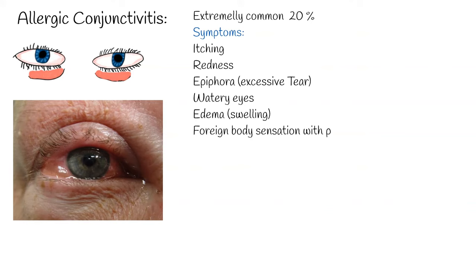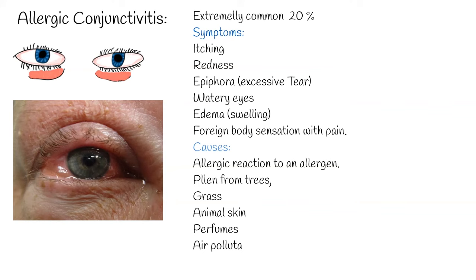The cause of allergic conjunctivitis is an allergic reaction to an allergen. Common allergens are pollen from trees, grass, and ragweed, animal skin and secretions, perfumes and cosmetics, medications, and air pollutants. The palpebral conjunctiva may become hypertrophic and gets a cobblestone appearance, called cobblestone papillae. In many cases, allergic conjunctivitis is combined with allergic rhinitis.